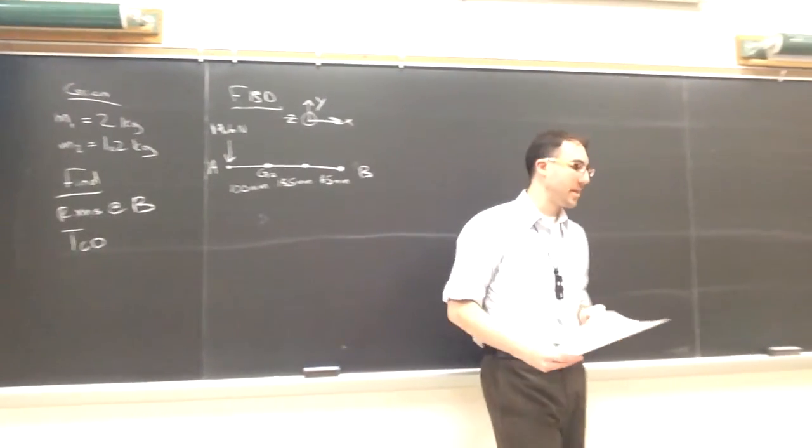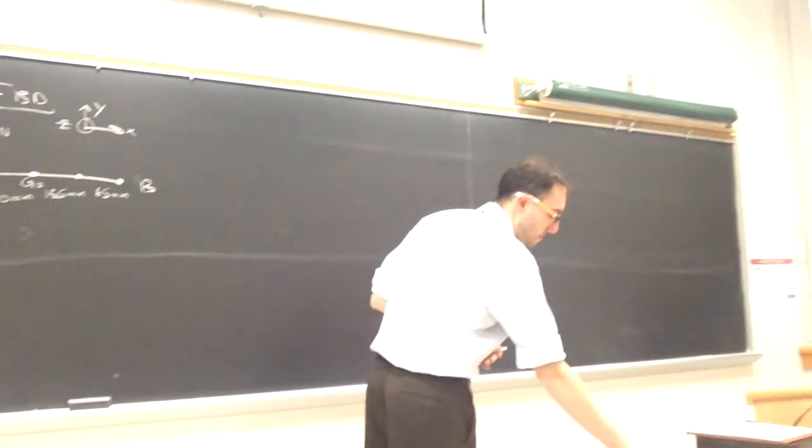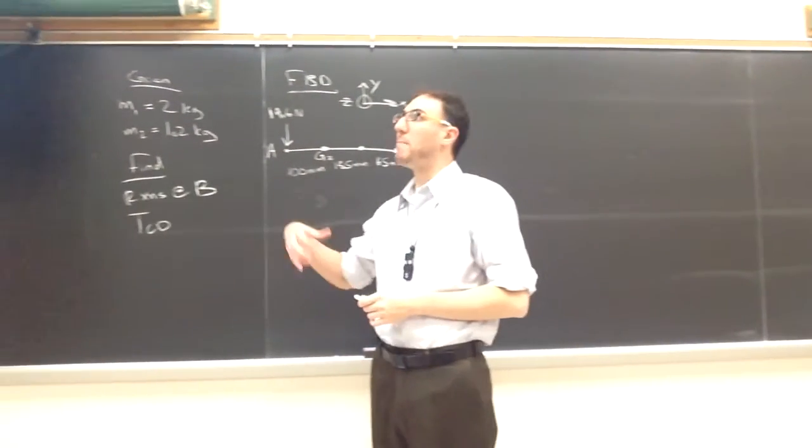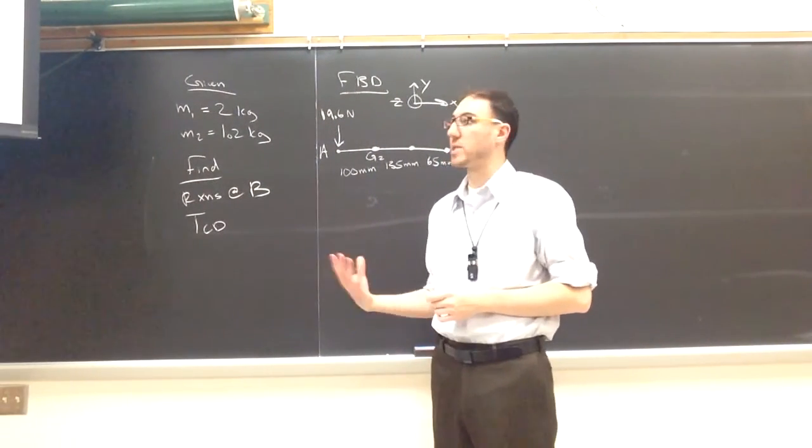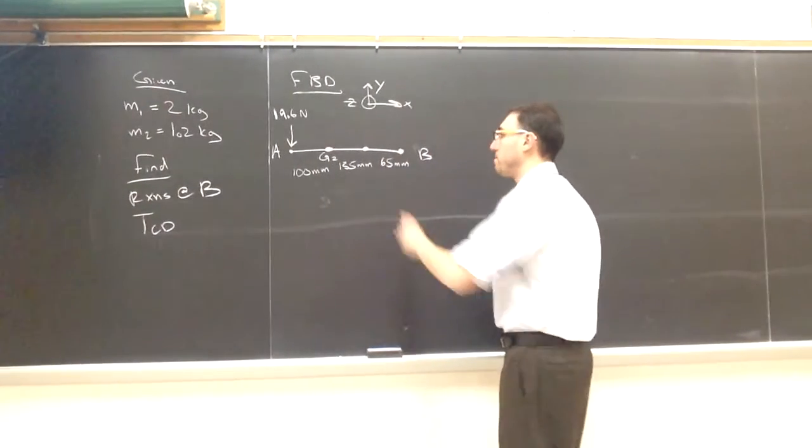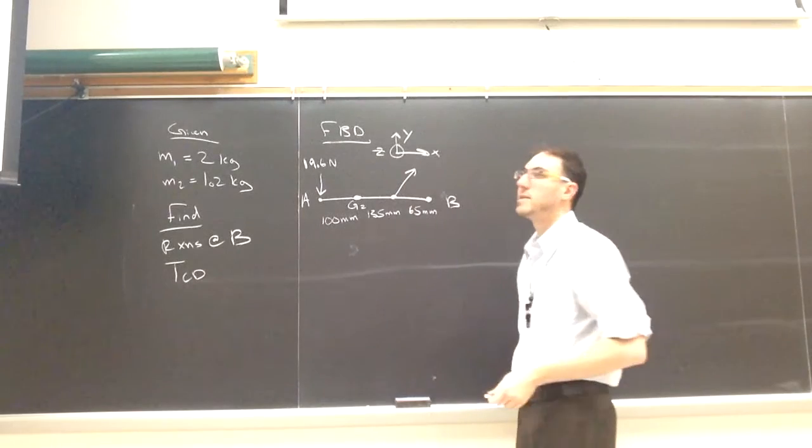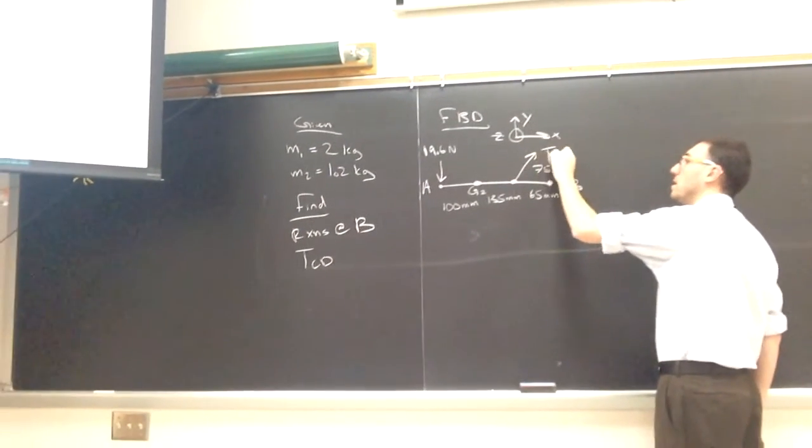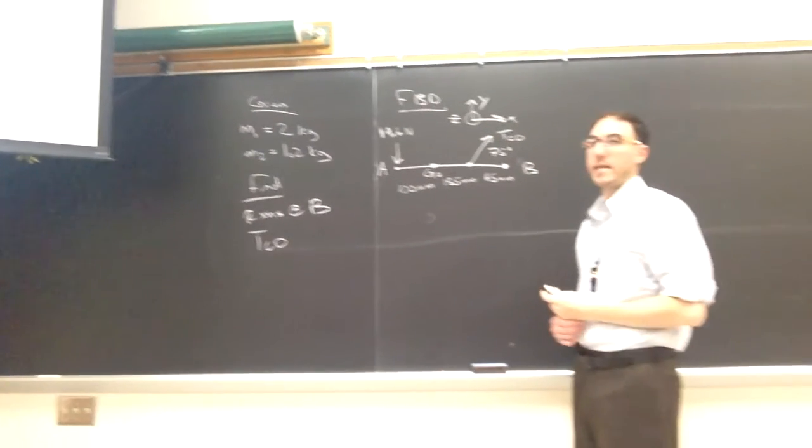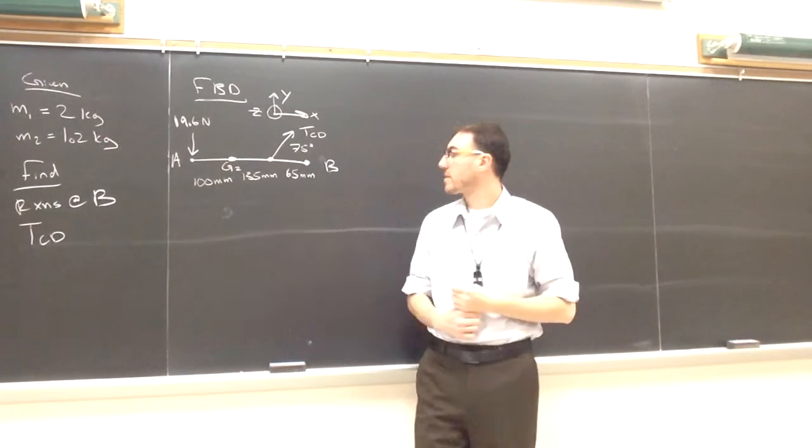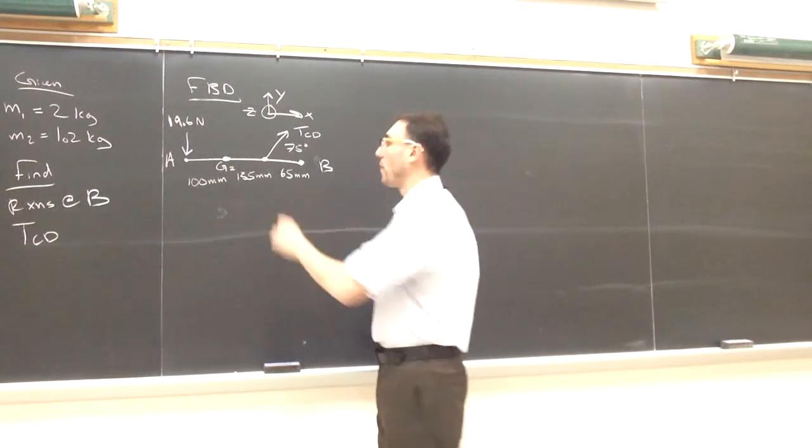What other forces act on the forearm? The tension in the muscle. Muscles like ropes can only pull on things, so we know there's going to be a tension or pulling 75 degrees from the horizontal. I'm going to call that TCD, the tension in the muscle, and it's acting at point C.